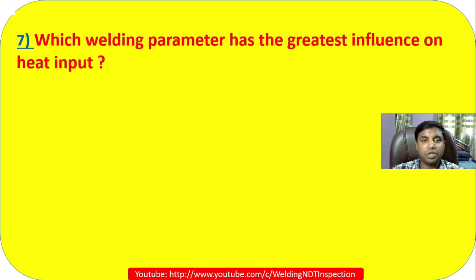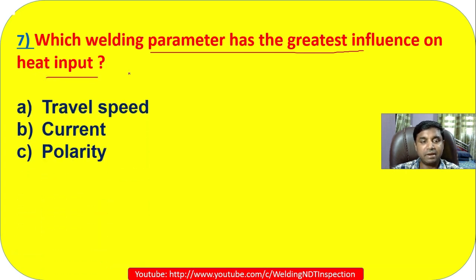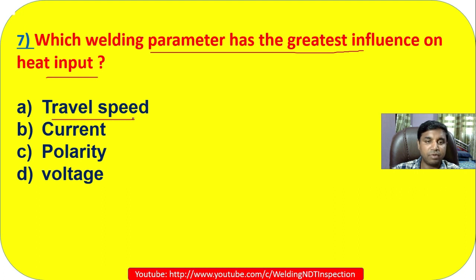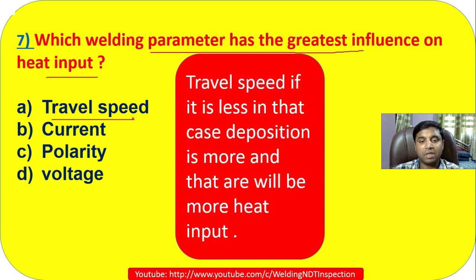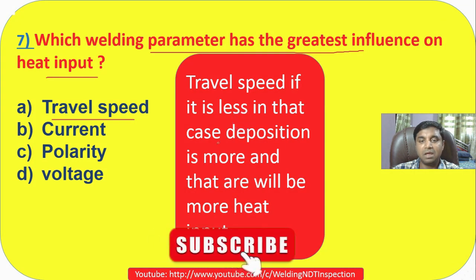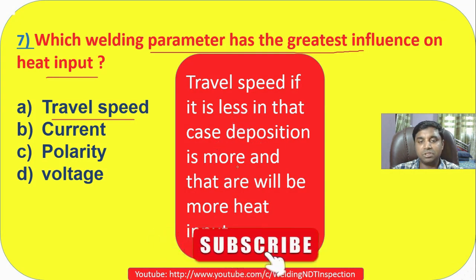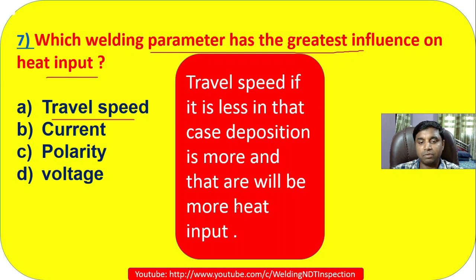Question 7: Which welding parameter has the greatest influence on heat input? Options: travel speed, current, polarity, or voltage. The correct answer is travel speed. If you slow down your travel speed, the heat input in that area will be more — deposition is greater and heat input increases. So answer is A, travel speed.